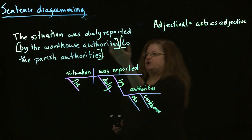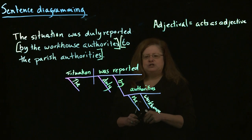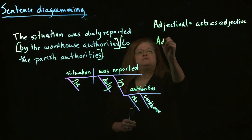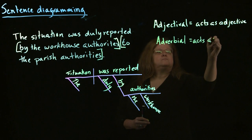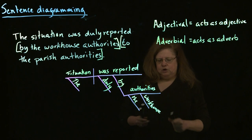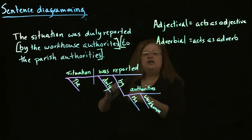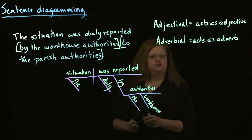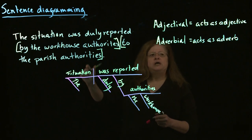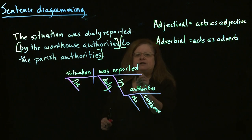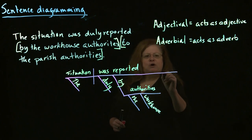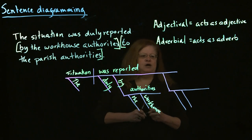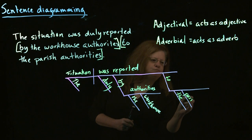And then we also have another prepositional phrase, 'to the parish authorities.' Once again, we see it's going to apply to the verb. So what we're looking at now are adverbial prepositional phrases. 'By the authorities' answers the question: in what way? — which is something that adverbs modify. Then 'to the parish authorities' answers the adverb question: where? And it applies to 'was reported.'